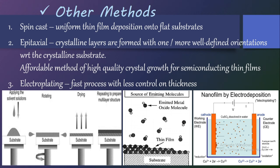In coming classes, under physical vapor deposition we will study thermal evaporation methods, and under CVD we will study chemical vapor deposition in detail, including MOCVD. Under other methods, we will study epitaxial growth — specifically MBE, molecular beam epitaxy — which has been mentioned many times in previous classes. In the next class we will start with thermal evaporation methods for preparation of thin films. Thank you.